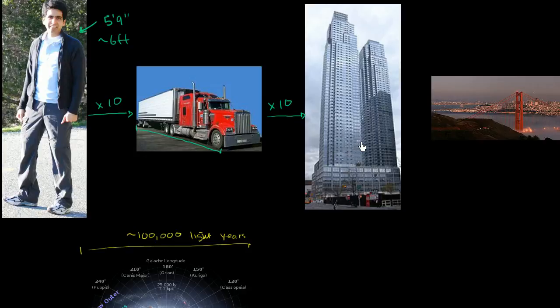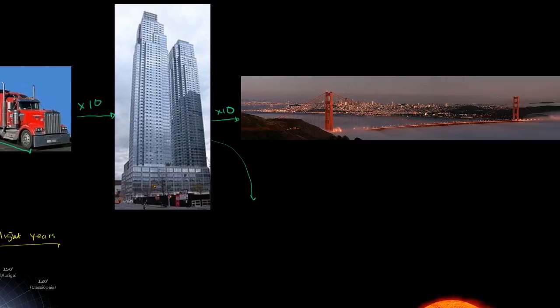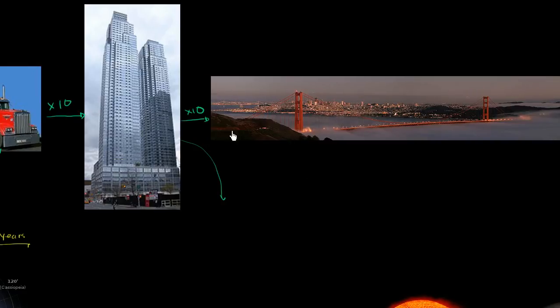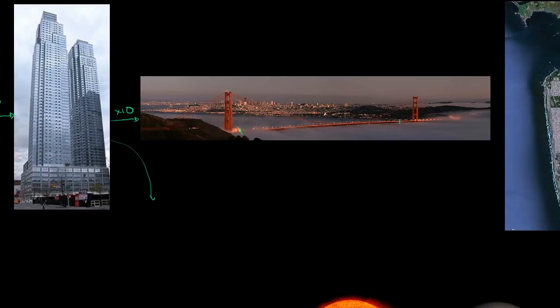Now, if you took that skyscraper and if you were to lie it down 10 times in a row, you'd get something the length of the Golden Gate Bridge. I'm not giving you the exact numbers, it's not always going to be exactly 10, but we're now getting to about something on the order of a mile long. The Golden Gate Bridge is actually longer than a mile, but if you go within the twin spans, it's roughly about a mile.